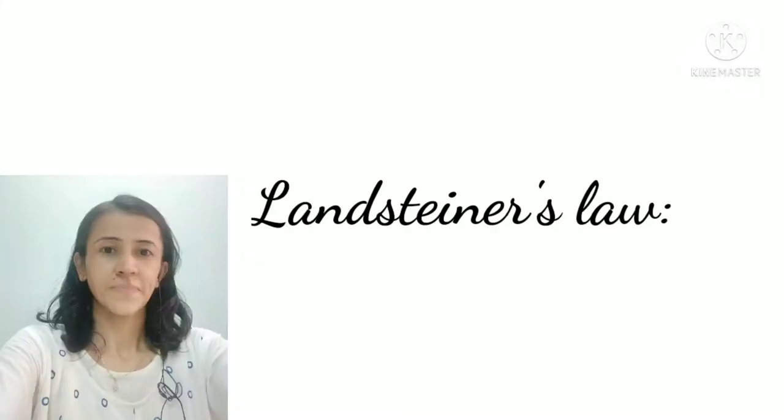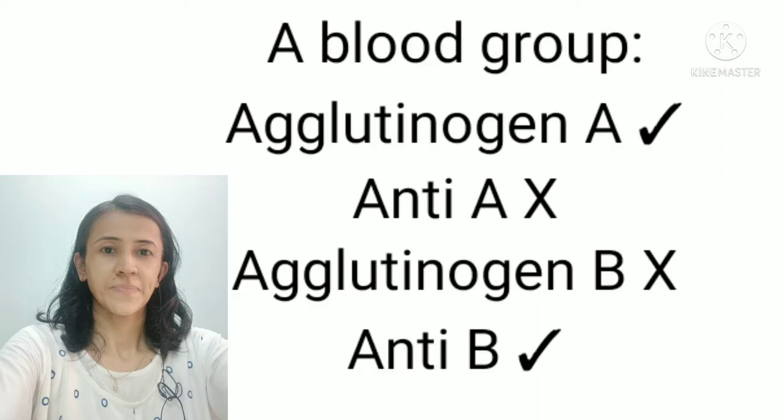Hello everyone, today we will discuss Landsteiner's law. As you all know, if somebody's blood group is A, agglutinogen A is present. When agglutinogen A is present, anti-A must be absent in the serum. Also, in a person with blood group A, agglutinogen B is absent, and when agglutinogen B is absent on the RBC membrane, anti-B are present in the serum.